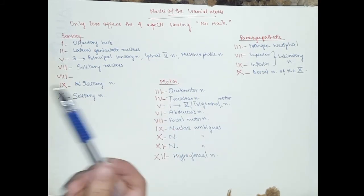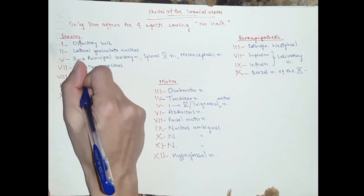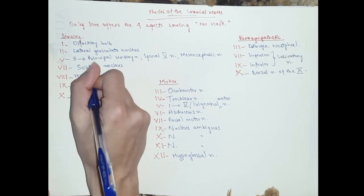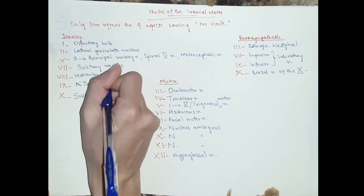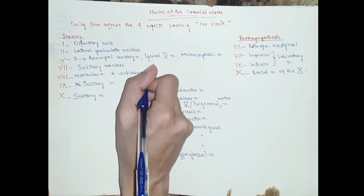That leaves us with number eight, which is vestibular cochlear. So we've got two nuclei, which is vestibular nucleus and cochlear nucleus.